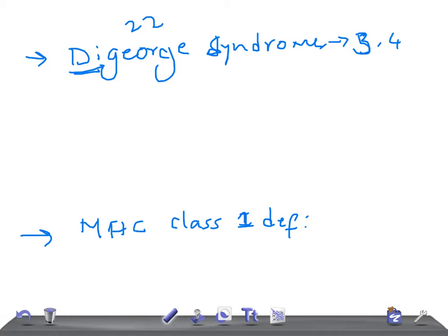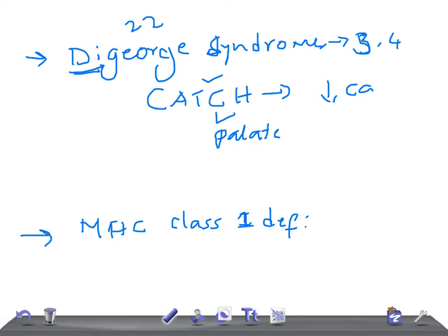The clinical manifestations use the mnemonic CATCH. C stands for cardiac abnormalities, such as tetralogy of Fallot. A stands for abnormal facies. In USMLE, if they mention any history of cardiac involvement or facial involvement, think of T-cell deficiency or DiGeorge Syndrome. T stands for thymic aplasia — very important. C stands for cleft palate — remember, very important. H stands for hypocalcemia or hypoparathyroidism, meaning low calcium.